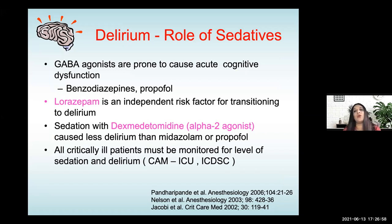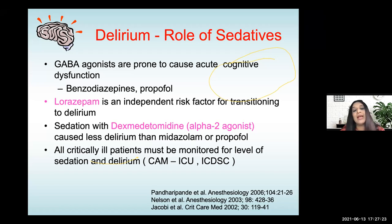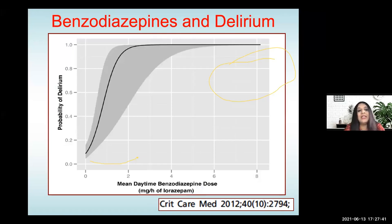There is a big role of sedatives — GABA agonists are prone to cause acute cognitive dysfunction. Benzodiazepines, even propofol, and lorazepam has been found to be an independent risk factor for transitioning into delirium. When I was a resident, we used a lot of lorazepam because it was longer-acting. But it was shown to be independently associated with delirium. We have now completely stopped using midazolam infusions. If we need to sedate urgently, we give just a bolus.